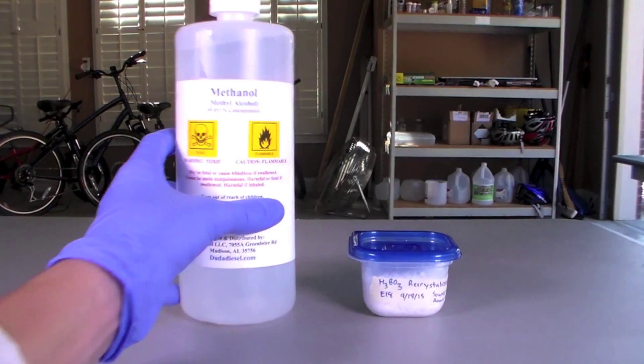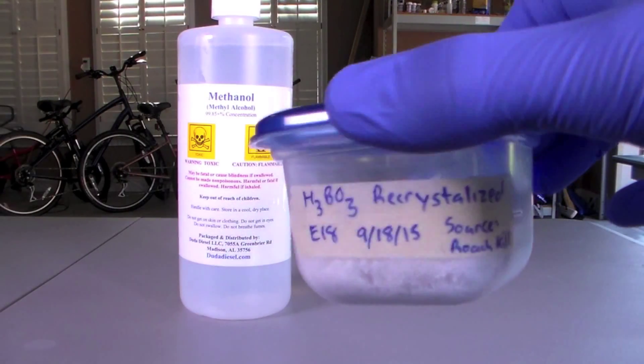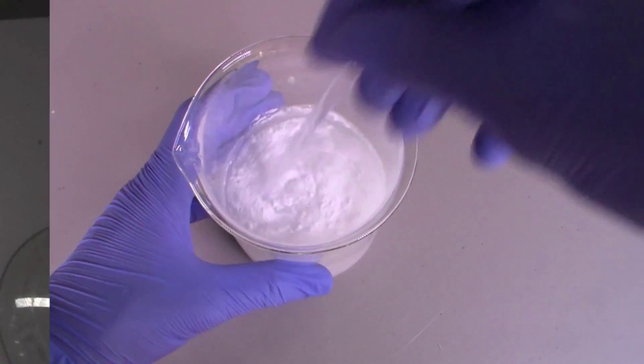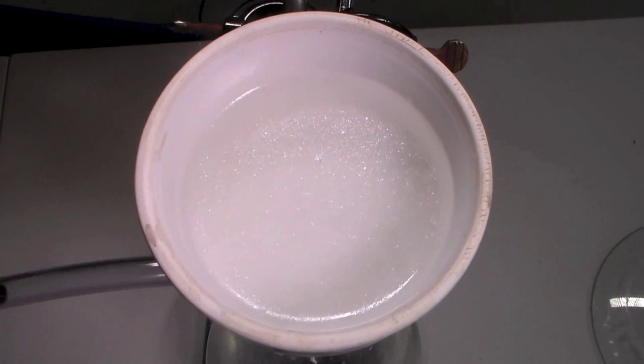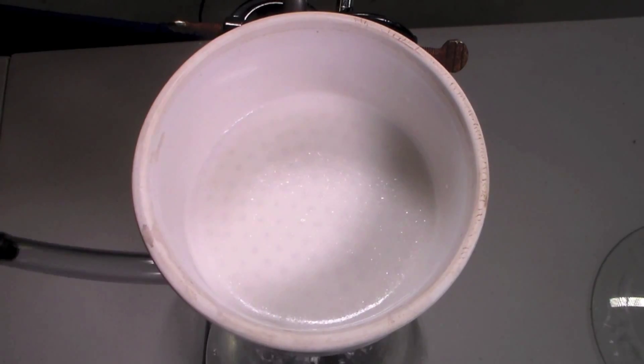The only chemicals you need for this experiment are methanol and the recrystallized boric acid that we made in a previous video. It is very important that the boric acid has been recrystallized because it must be as pure as possible for this experiment to work properly.